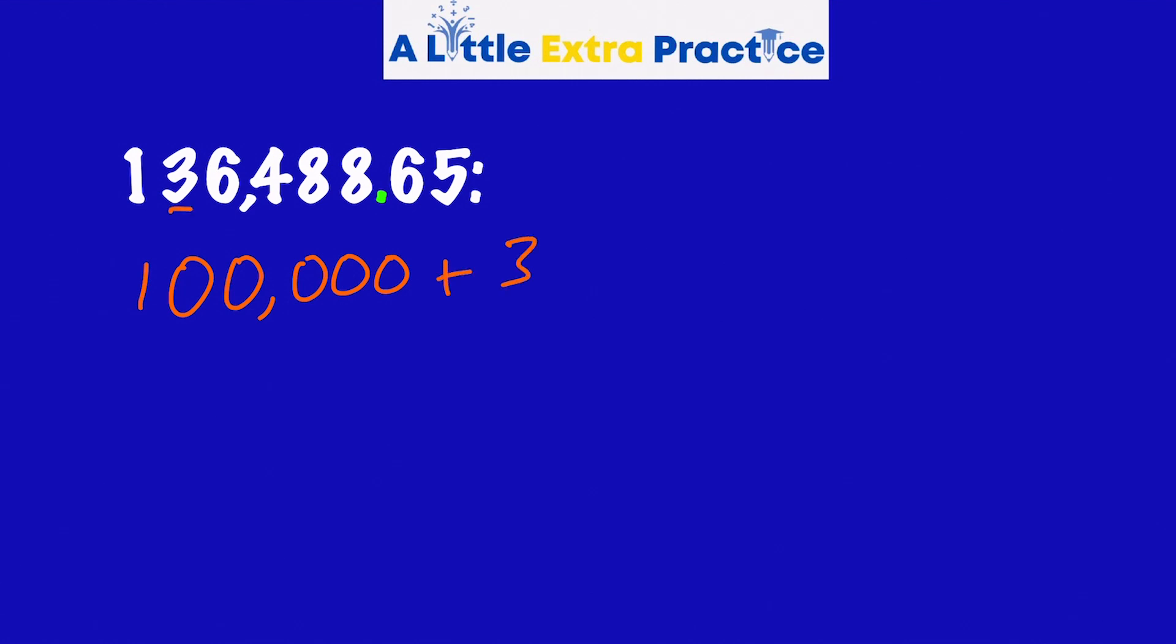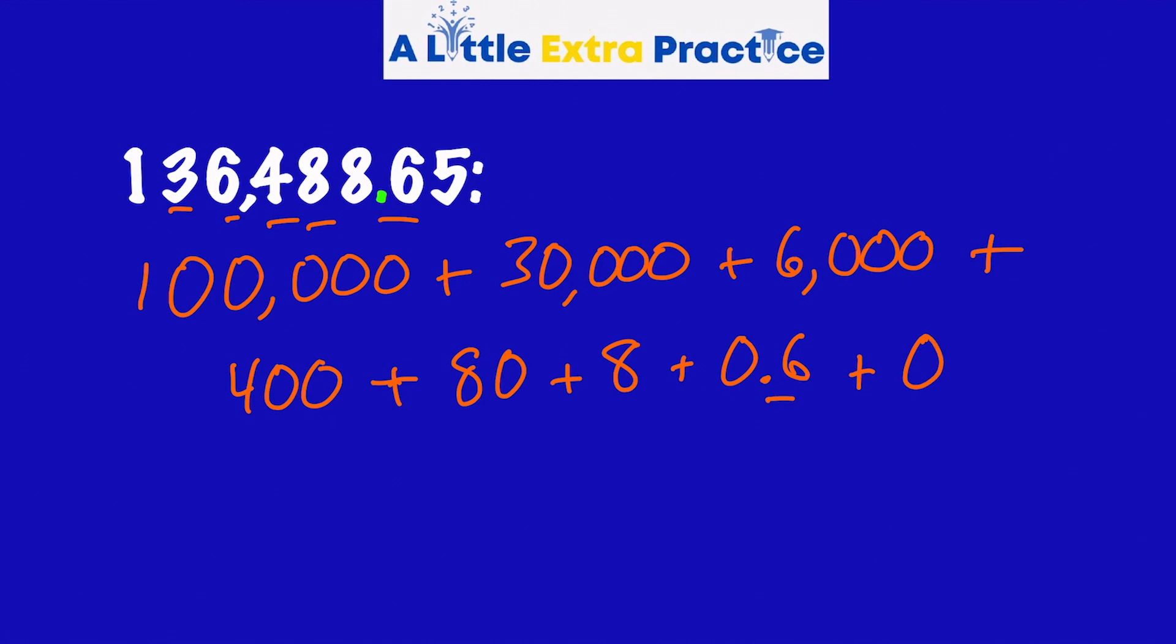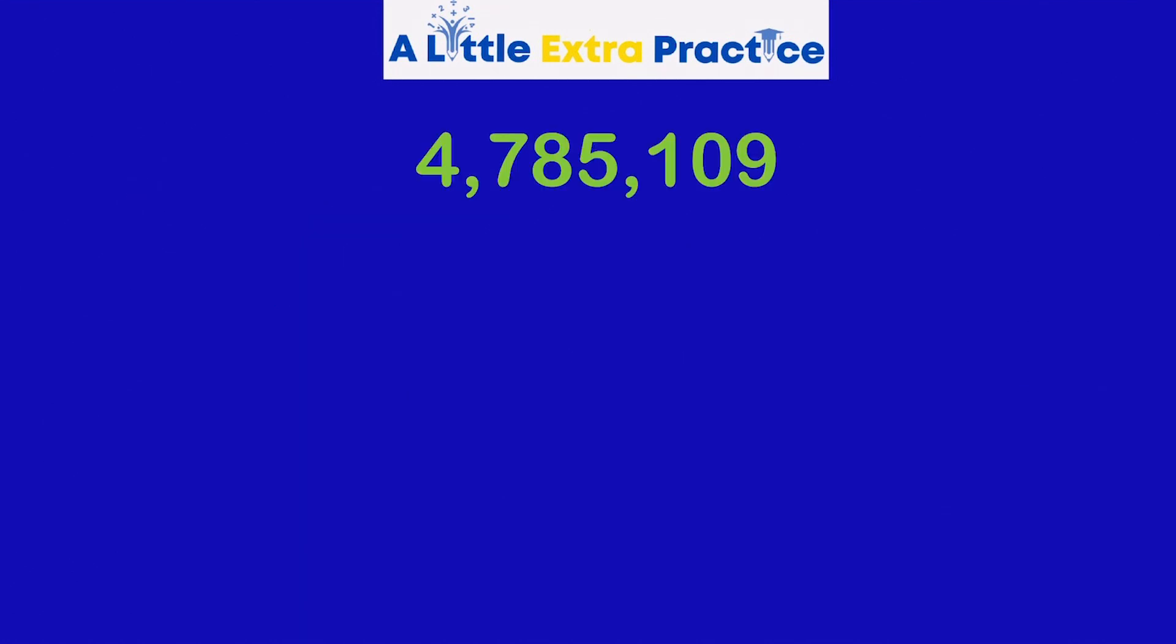A 3 in the 10,000s, so that's 30,000. A 6 in the 1,000s. Plus, a 4 in the 100s. Plus an 8 in the 10s. Another 8 in the 1s. Notice the decimal. And then the 6 in the 10ths, so I'm just going to do 0.6. And then I have a 5 in the 100ths. So 0.05 in the 100ths.